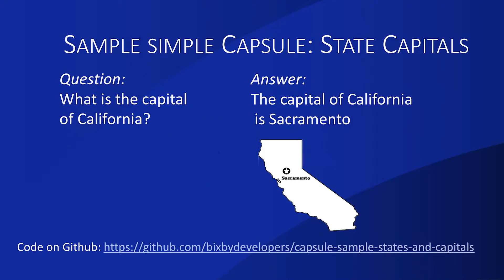Our sample capsule is really simple. We're just asking: what is the capital of a state name? And answering: the capital of the state name is the capital. So, what is the capital of California? The output is: the capital of California is Sacramento. And there's a little state outline graphic below. I have the link to the GitHub repo with this code below, so feel free to download that and take a look as you follow along with this tutorial.